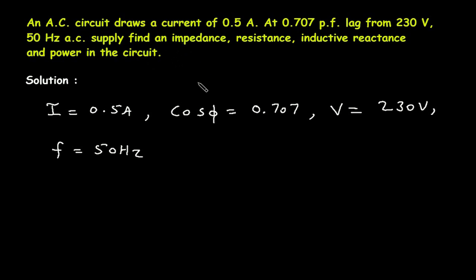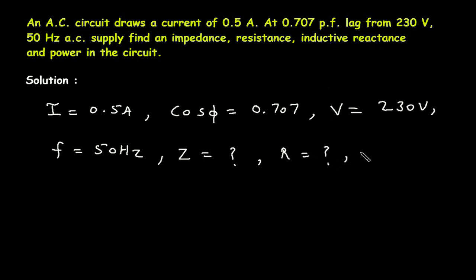We have to find: impedance Z, resistance R, inductive reactance XL, and power P in the circuit.